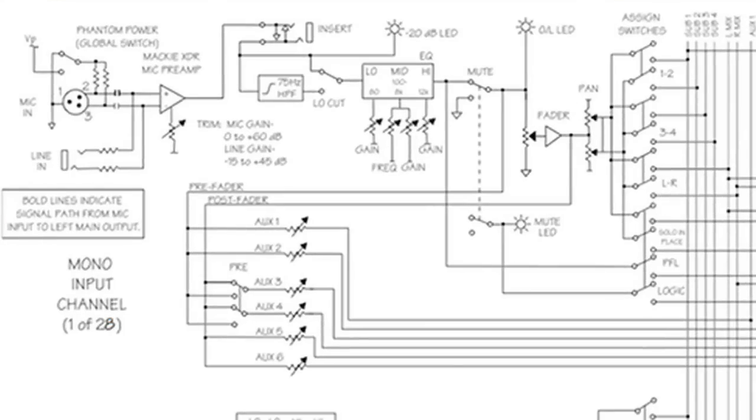And then after the trim knob, or it could be also called the mic preamp, we've got the insert send. So this is a direct out right after the preamp. And you can maybe send this channel to a recording interface or some sort of recording device. Or you could send it to a processor, like a compressor or a reverb. And then using a Y cable, have that signal processed using outboard gear and then input right back into the same insert.